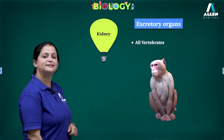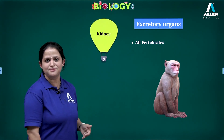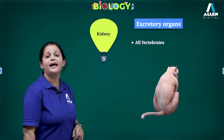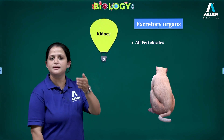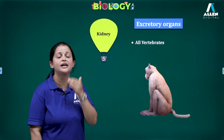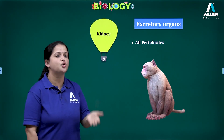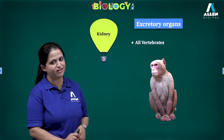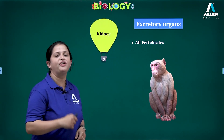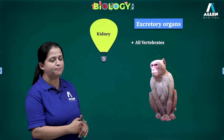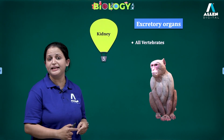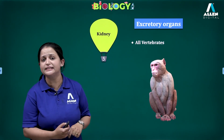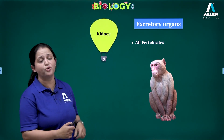The last excretory organ is the kidney. In advanced high-level organisms — in vertebrates — we can find kidney as the excretory organ. Different animals, depending upon the level of organization and type of habitat, have different excretory organs. These are the five different types of excretory organs. The concepts covered so far are the different types of waste material, the types of animals based on which waste material is eliminated, and then the excretory organs.